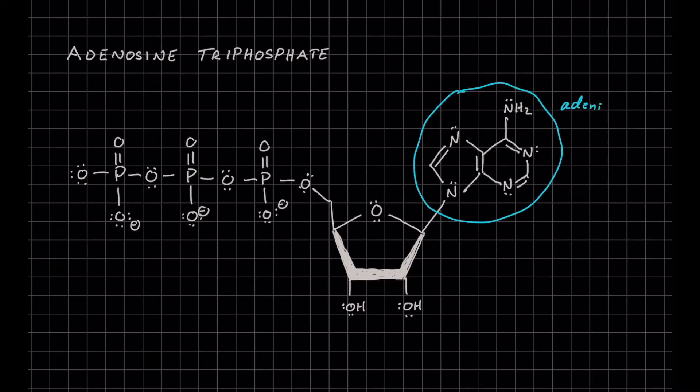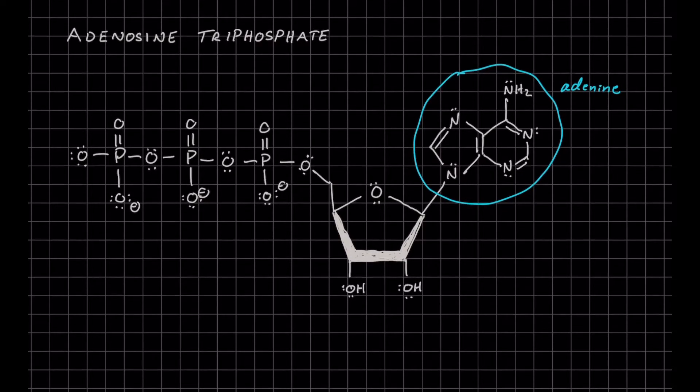This is one of the five nitrogenous bases that you should probably get to know for the MCAT as well, because believe it or not they actually do expect you to be able to recognize and differentiate these different structures. So things like adenine, thymine, cytosine, guanine, and uracil.